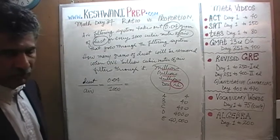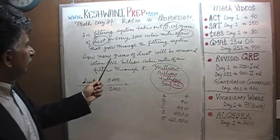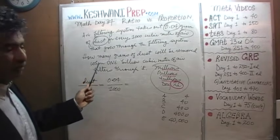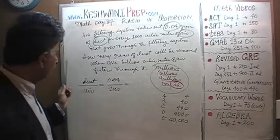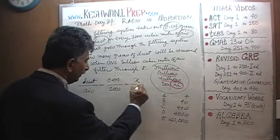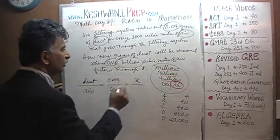We are told that it removes 0.04 grams of dust for every 1,000 cubic meters of air. How many grams of dust for every 1,000,000,000 cubic meters of air? That's the unknown.